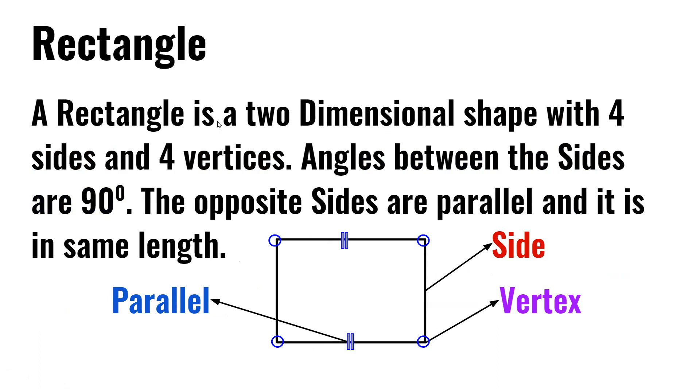A rectangle is a two-dimensional shape with four sides and four vertices. Angles between the sides are 90 degrees. The opposite sides are parallel and it is the same length.